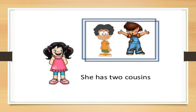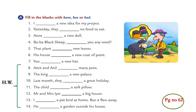Okay, now let's do some more exercises. Page number 62 — fill in the blanks with has, have, had. Remember, has and have in the present tense and had in the past tense. First: I dash a new idea for my project. It is present tense, so has or have? We just read that with I, we will use have. So, I have a new idea for my project.